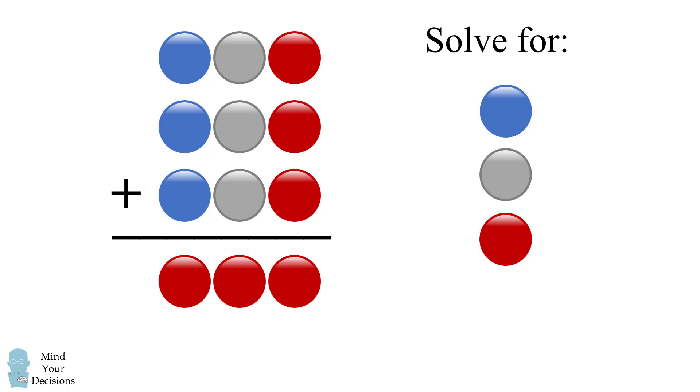So how can we solve this problem? There are many different ways you can go. I'm just gonna explain the way that I solved it. So first I converted this into an algebraic problem. I said the blue circle is represented by a, the gray circle is represented by b, and the red circle is represented by c. So we have the problem abc being added together three times to produce the result of ccc.